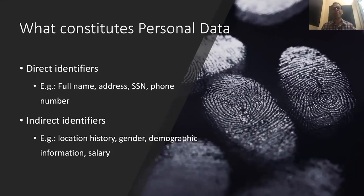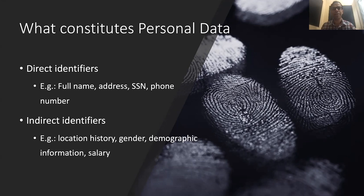What exactly does private or personal data mean? At a high level, it could mean two things. First, anything that can be used to directly identify a unique individual — typical examples include full names, addresses, social security numbers, phone numbers, credit card numbers, etc. Then there's another class of indirect identifiers or quasi-identifiers that by themselves can't identify a unique individual, but when combined with other data — public or otherwise — could be used to do so. Examples include gender, demographic information, salary, and location history.